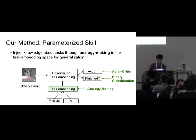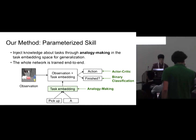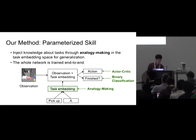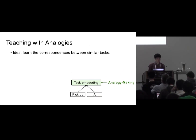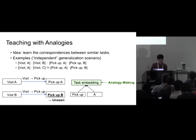In order to inject some knowledge about the tasks, we proposed an analogy-making objective which I'll describe shortly. The whole network is trained end-to-end using these three objectives. The key idea of analogy-making is to learn the correspondences between similar tasks and learn the differences between different tasks. For example, if we have four similar tasks like 'visit A', 'visit B', 'pickup A', and 'pickup B', we can think about relationships between these tasks.